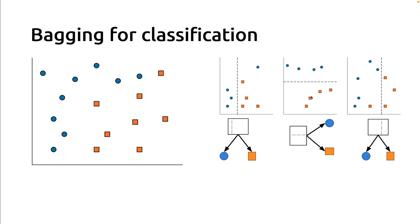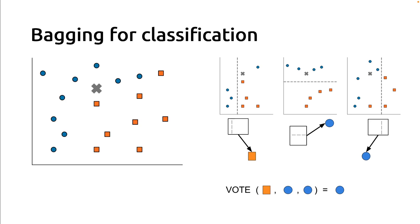The second part of the algorithm is called aggregation, which means we consider the aggregated predictions of those three models. Let's consider a test data point at this location. The first decision tree will predict it on the right side of the decision split, so it will vote for orange. The second decision tree will vote for blue because it's on the upside of its decision function. And the third decision tree will vote for blue again because it's on the left side of its own decision function. So we have a majority of two blue votes, and the ensemble will predict blue.